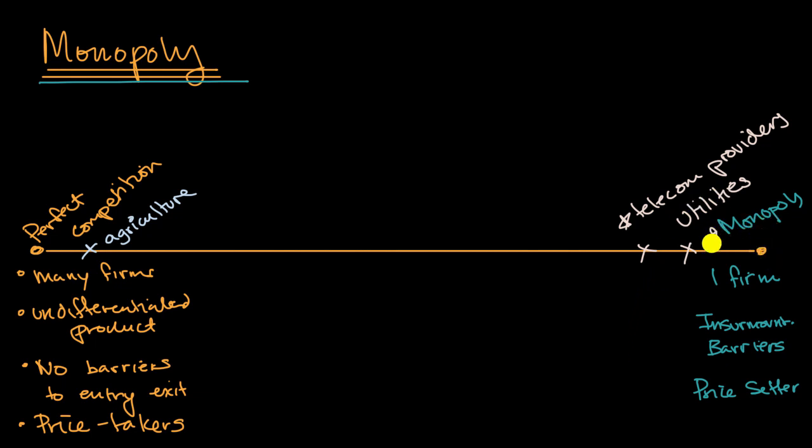And so the next few videos, we're gonna dive a little bit deeper into what it means to be a monopoly, and what is the rational quantity for a profit-maximizing monopolistic firm to actually produce, and what would be their economic profit?